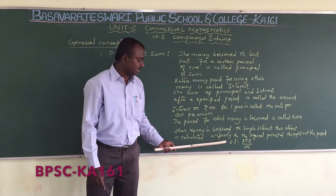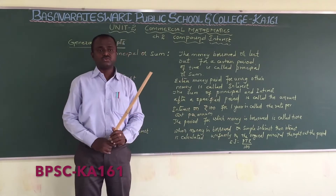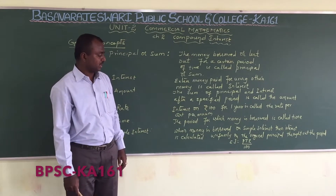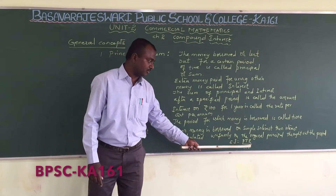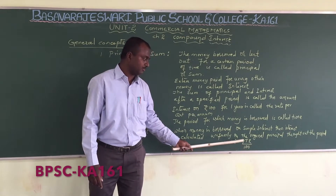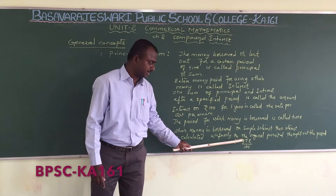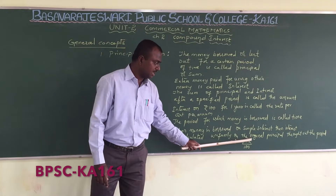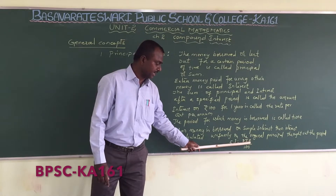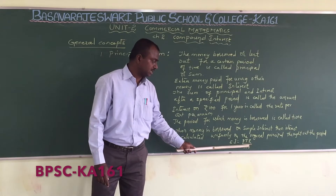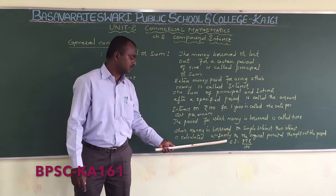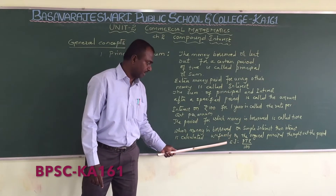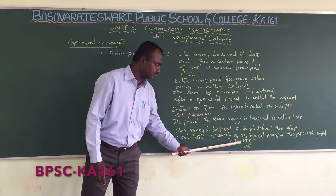So what is the formula we use for simple interest? Simple interest is equal to PTR divided by 100, where P means principal, T means time, R means rate of interest, all divided by 100. This is the formula to find the simple interest.